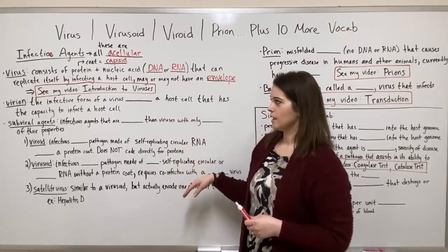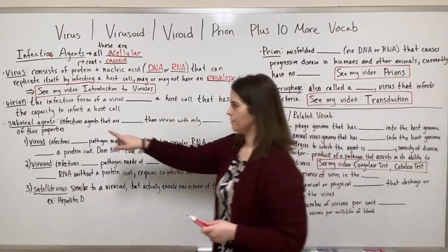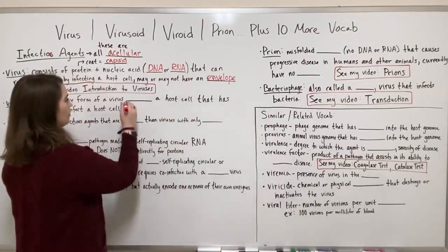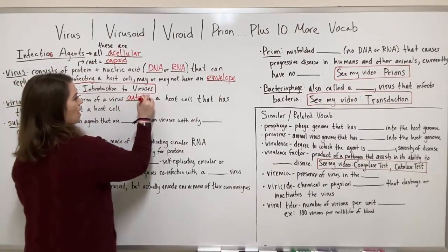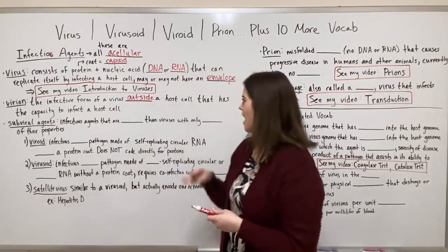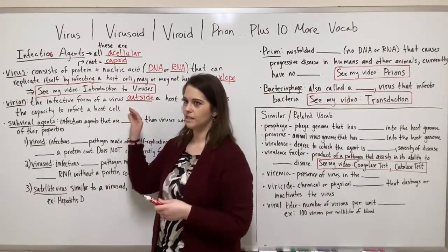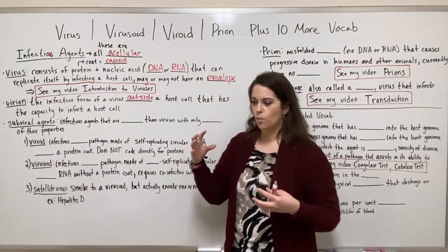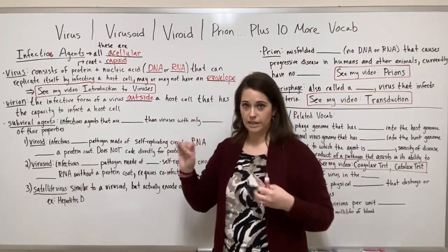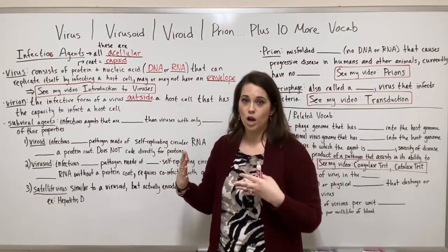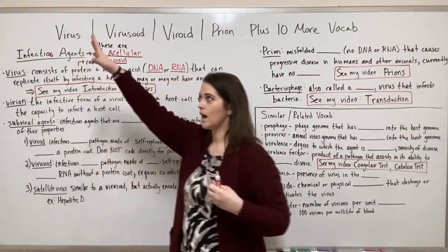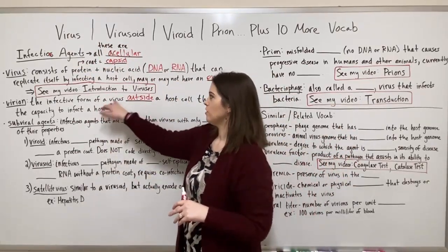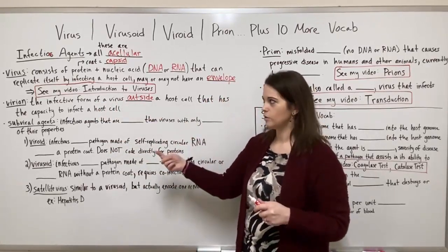Now let's move on to some similar vocab words. A virion is the infective form of a virus, specifically outside of a host cell, with the capacity to infect a host cell. In virus replication cycles, one of the last steps is release — the release of progeny virions outside the host cell so they can float away and infect another cell.